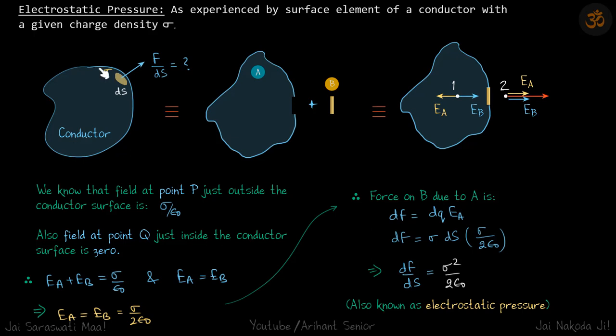Electrostatic pressure. Here we will discuss a conductor with a small surface element where the charge density is sigma coulombs per meter squared. We need to find the pressure experienced by this element - the force per unit area on this small surface element on the conductor.